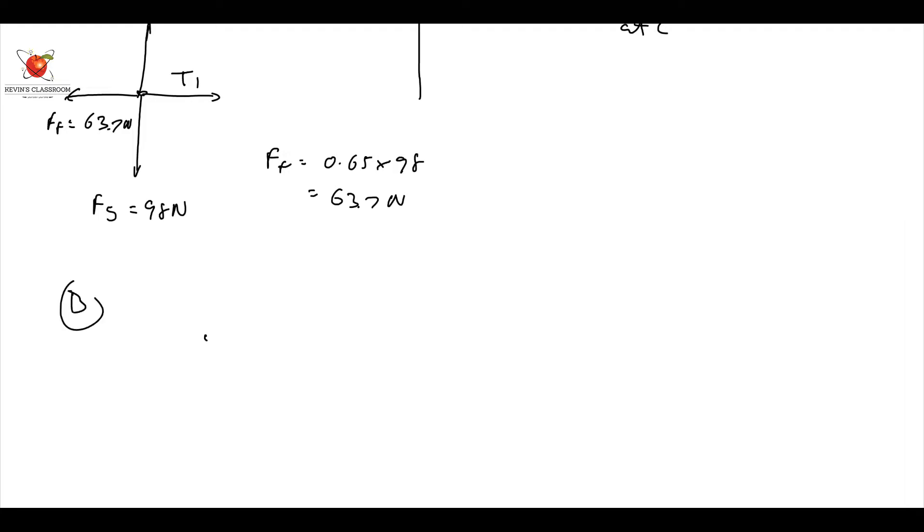I do the same thing. Always put in my FG first. My FG in this case is 9.8 times 5, which is going to be 49 newtons, and F normal is also going to be equal to 49 newtons. And FF in this case is going to be equal to 0.65 times 49, which is going to be equal to 31.85 newtons like that, and I have also got T1 acting that way, T2 that way. Now,